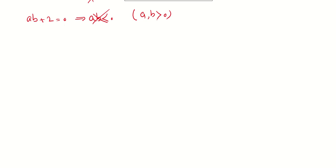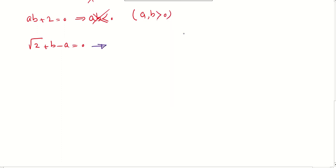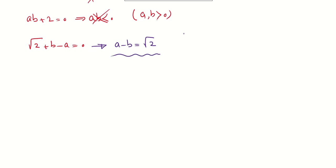So the only acceptable case is √2 + b − a = 0, which means a − b = √2. Recall a = √(x+2) and b = √(2−x), so √(x+2) − √(2−x) = √2.